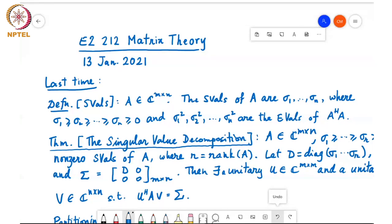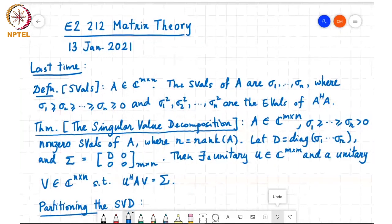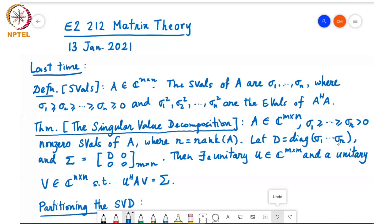The singular value decomposition theorem states that if A is an m by n matrix and σ₁ through σᵣ are the non-zero singular values of A, where r is the rank of A, and if we define D to be a diagonal matrix containing σ₁ through σᵣ and Σ to be a matrix with D as its top-left r×r block and zeros elsewhere of size m×n, then there exists a unitary U of size m×m and a unitary V of size n×n such that U-Hermitian A V equals Σ.